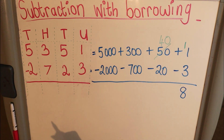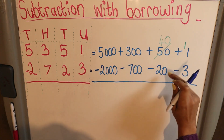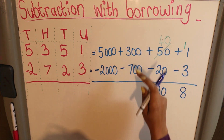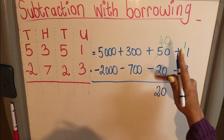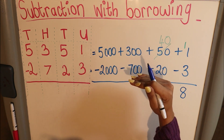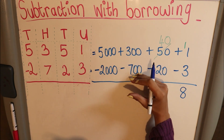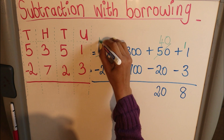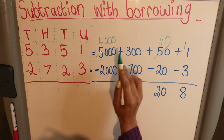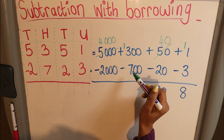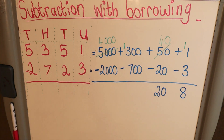Top minus bottom: forty minus twenty is twenty. Next, three hundred minus seven hundred — I can't do that, and I don't switch them around. So I need to borrow. I borrow one thousand from five thousand, leaving four thousand. That thousand carries over to the hundreds, making it one thousand three hundred. One thousand three hundred minus seven hundred is six hundred.